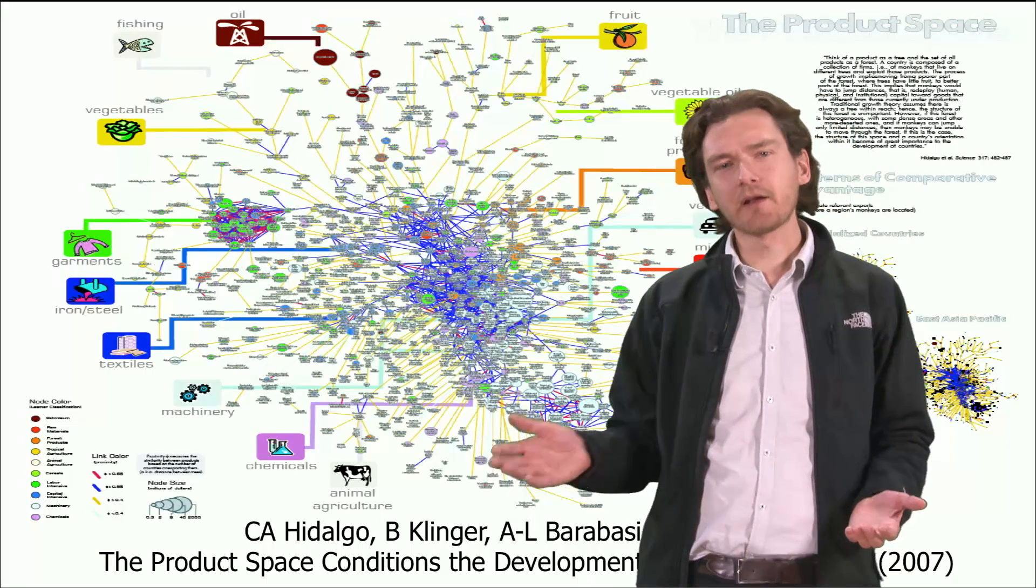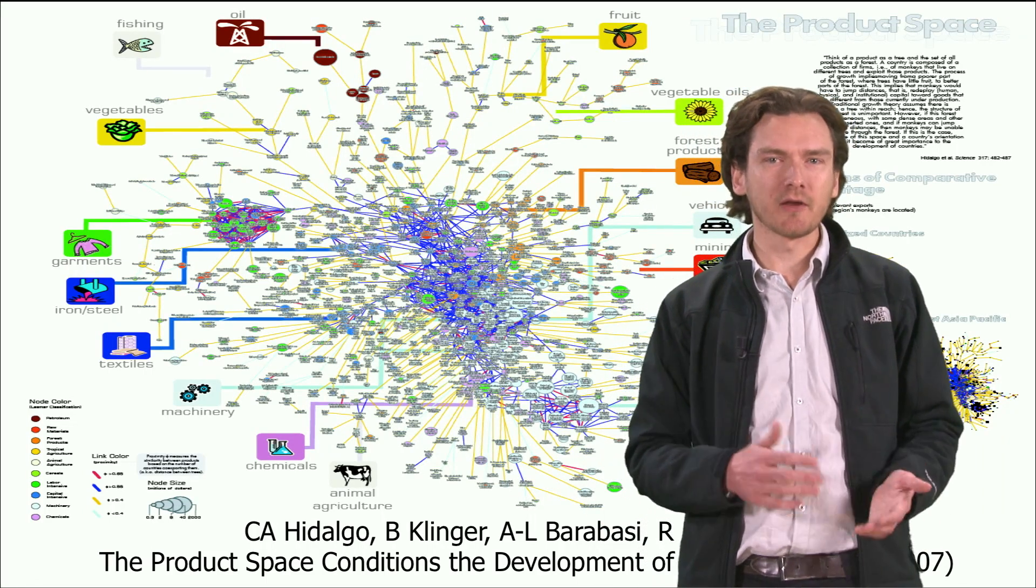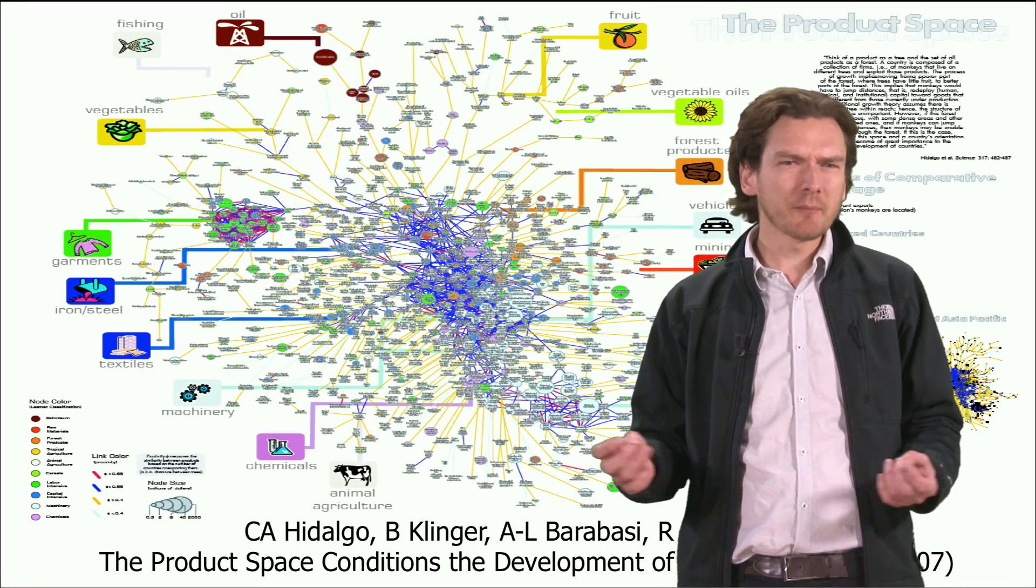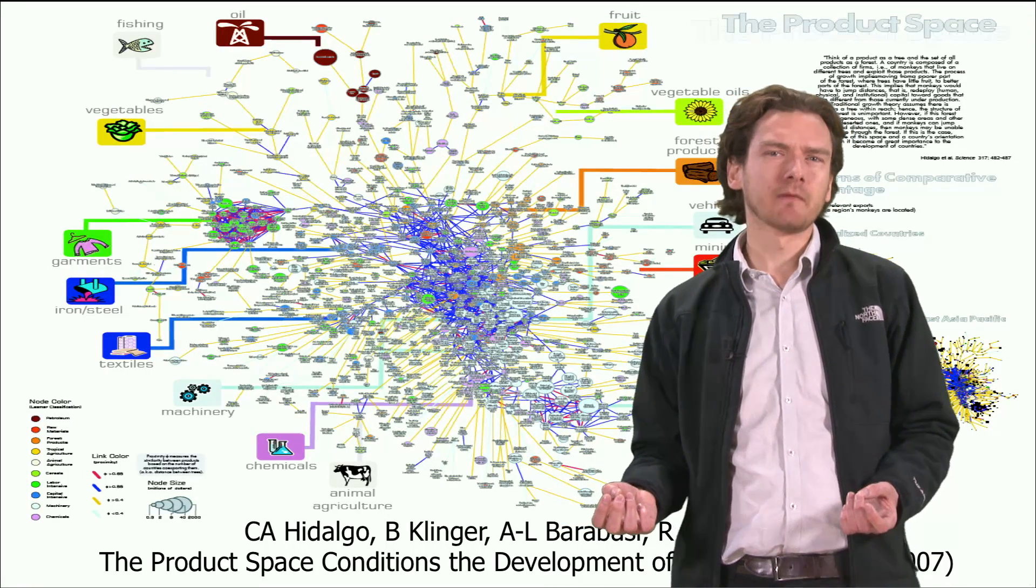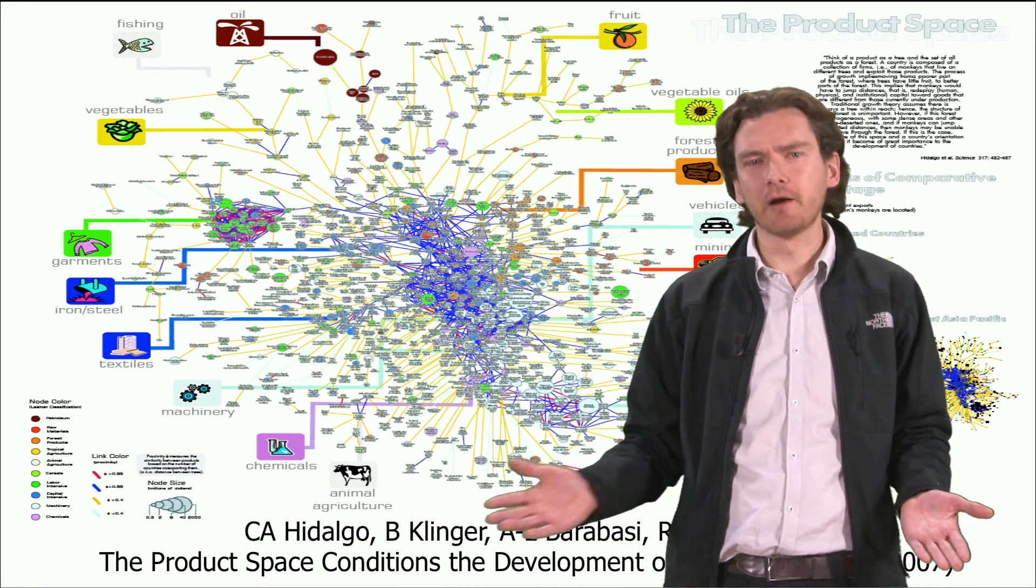For example, if you have a large computer chip manufacturing industry, it's not too difficult a shift to produce photovoltaics. Both of these industries have overlap in terms of the types of skills and machinery that is needed.